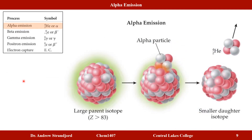In alpha emission, a nucleus with atomic number 83 undergoes a nuclear reaction and emits an alpha particle, which is essentially a helium atom — two protons and two neutrons. By losing two protons and two neutrons, the element is completely transformed into a different element because its proton count has changed.